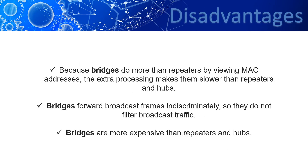Disadvantages of a bridge: 1. Because bridges do more than repeaters by viewing MAC addresses, the extra processing makes them slower than repeaters and hubs. 2. Bridges forward broadcast frames indiscriminately, so they do not filter broadcast traffic. Bridges are also more expensive than repeaters.